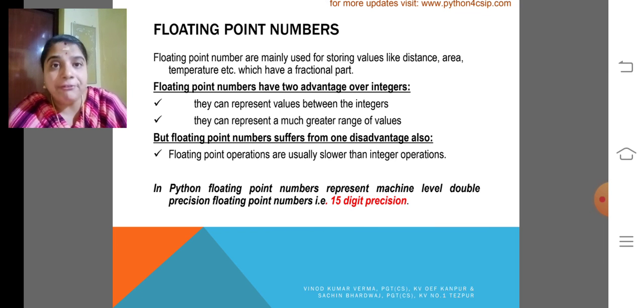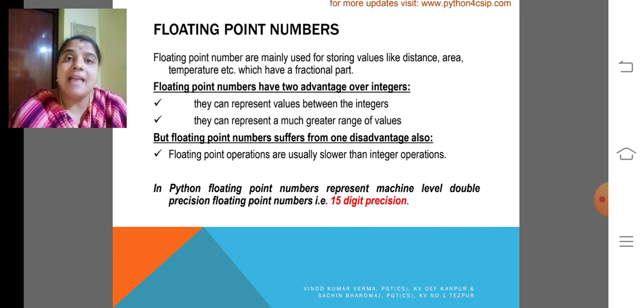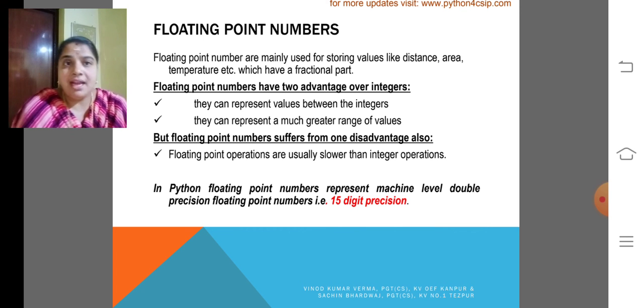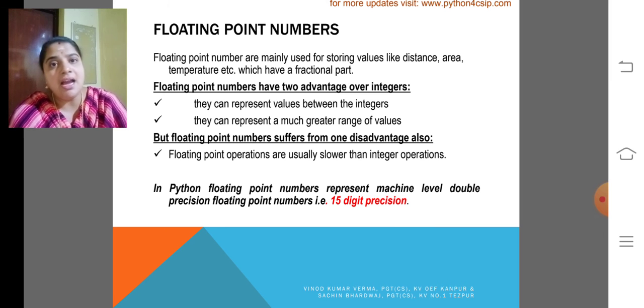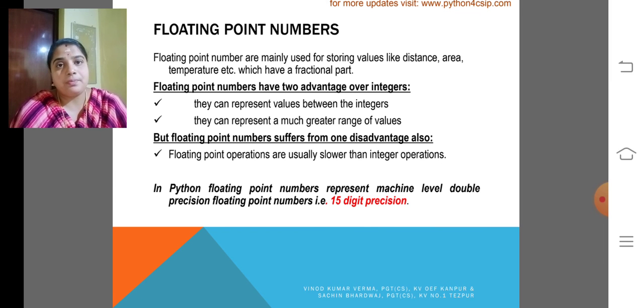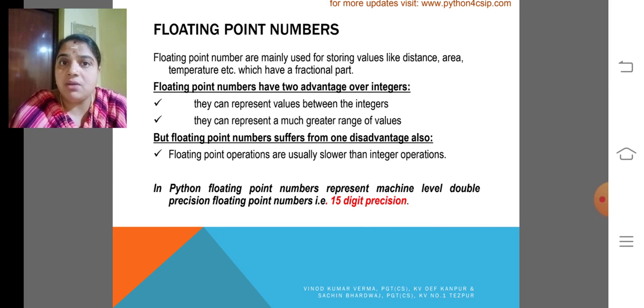In Python, floating point numbers represent machine level double precision floating point numbers, that is 15 digit precision. We can have 15 digits after decimal point. That means we can give that much accuracy for a particular value, whether it is distance, area, or temperature. We can also use any scientific calculation with floating point numbers.